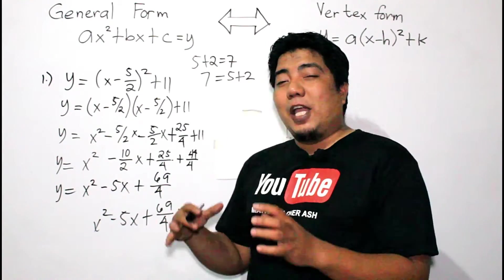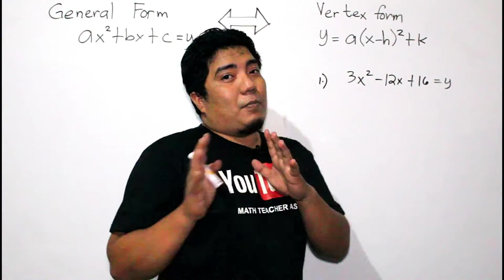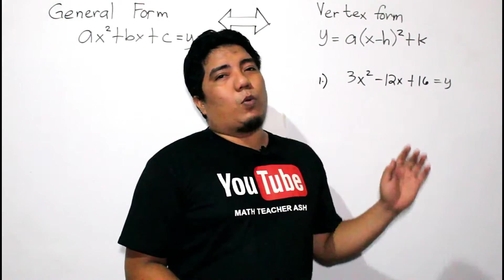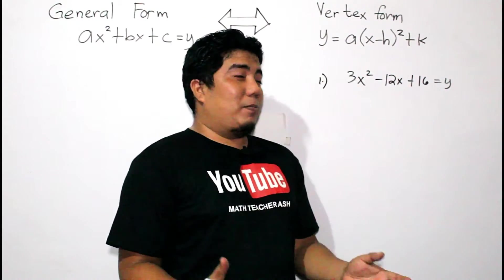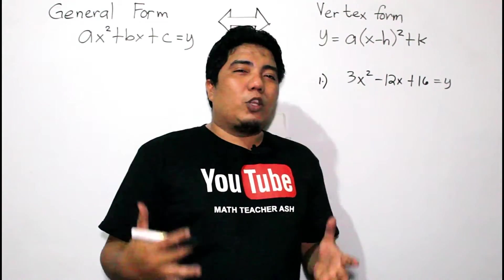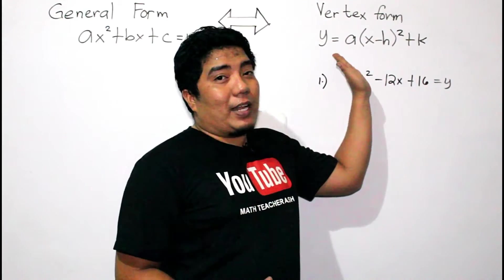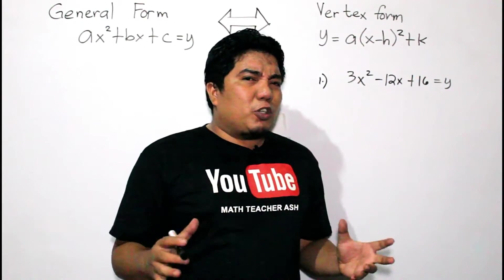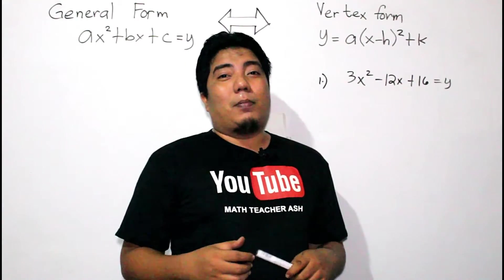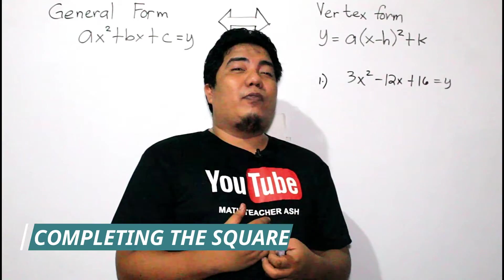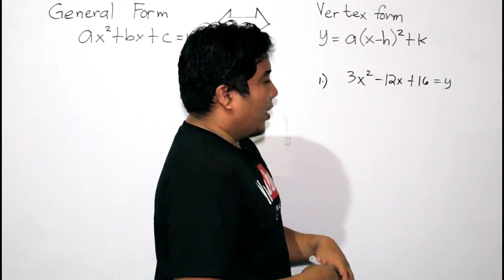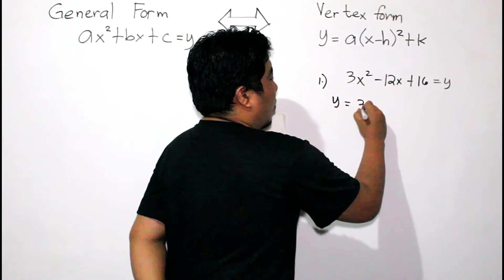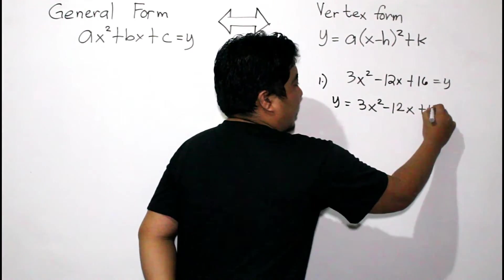Now let us talk about how to transform general form to vertex form. We have here 3X squared minus 12X plus 16 equals Y. As you can see, this is a general form because we have A, B, C, and our Y. In order to arrive at the vertex form Y equals A times (X minus H) squared plus K, you need to have a strong foundation in completing the square, which is the third method in solving quadratic equations. Using the symmetrical property of equality, we rewrite it as Y equals 3X squared minus 12X plus 16.